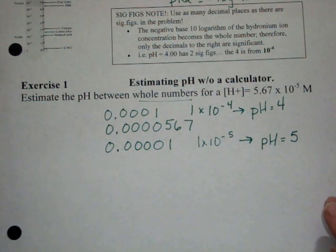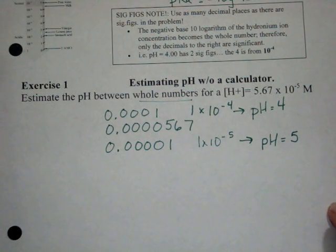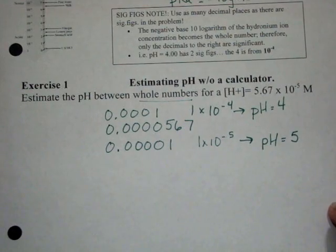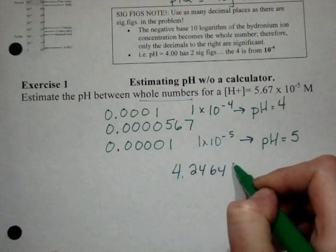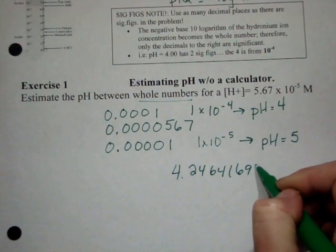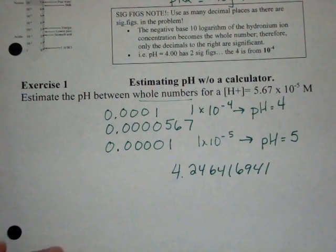So I'm going to go ahead and plug that into the calculator. Negative log, now that I've got an estimate, of 5.67 times 10 to the negative 5. And I get 4.246416941. Well, that's an awful lot of numbers.